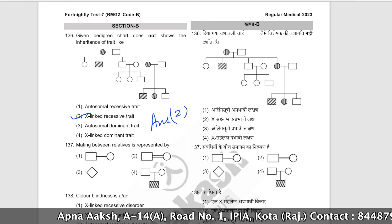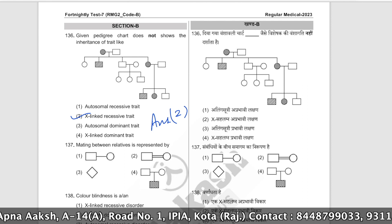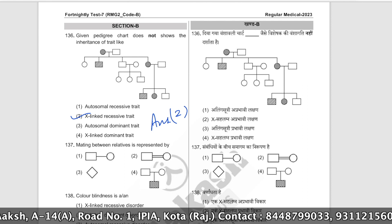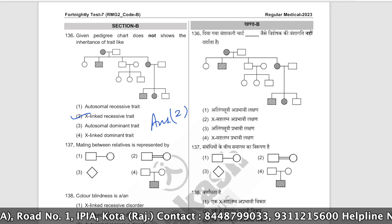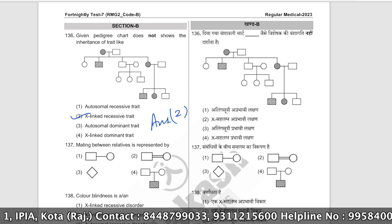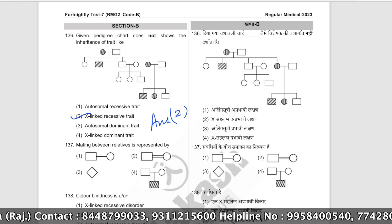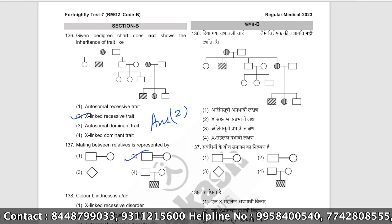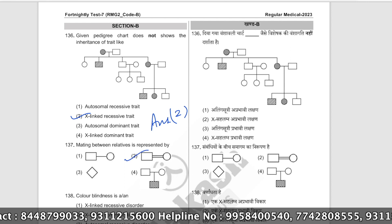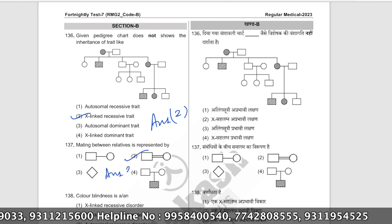Mating between relatives in a pedigree chart is represented by double lines connecting the couple. The correct answer is option number two.